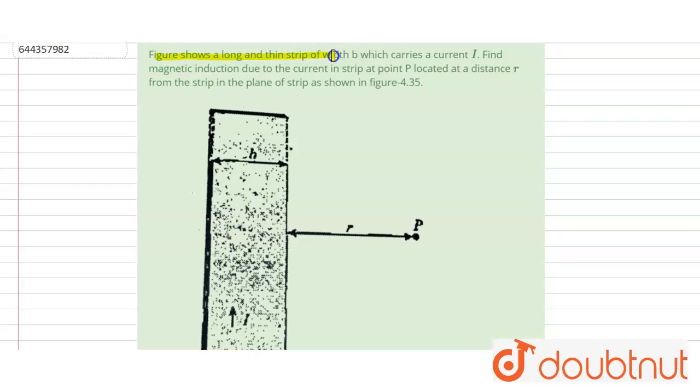Figure shows a long and thin strip of width b which carries a current I. Find the magnetic induction due to the current in strip at a point P located at a distance r from the strip in the plane of the strip as shown in the figure.